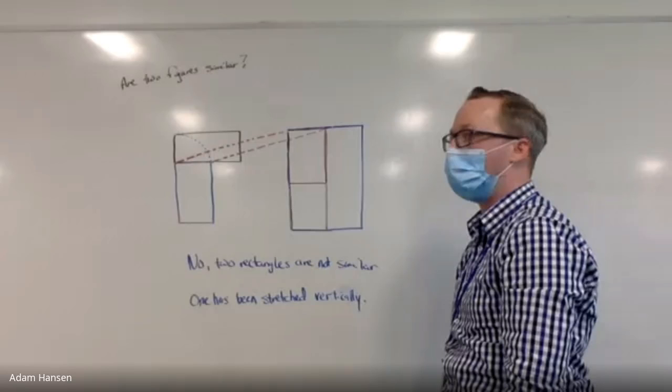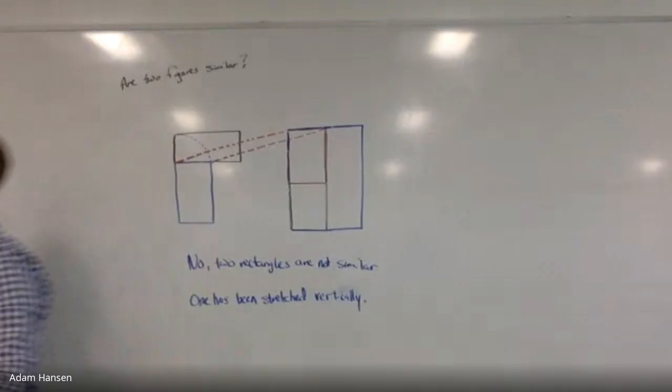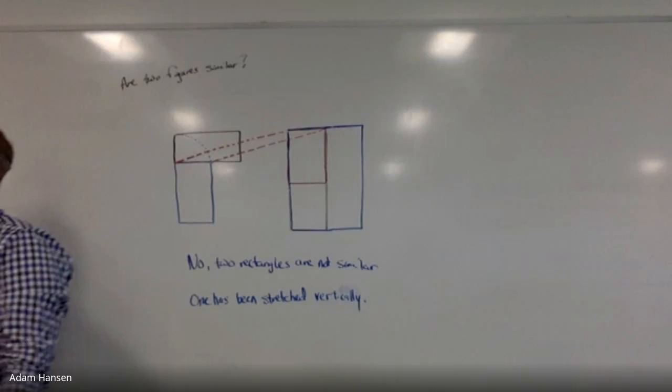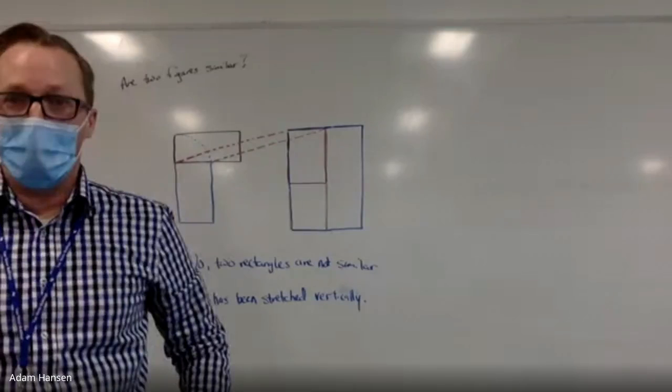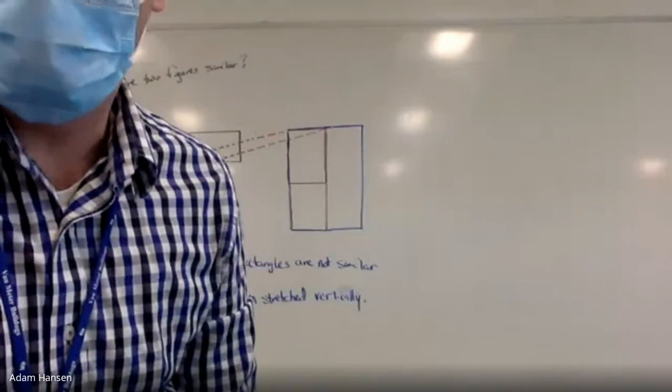That would be a non-rigid transformation because I changed the distance between some of the points, not all of them. I can only use rigid transformations where I don't change the size at all, and dilation where I change it proportionally for all the side lengths of the shape. All right. Why don't you grab your laptops?